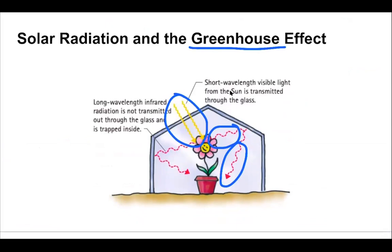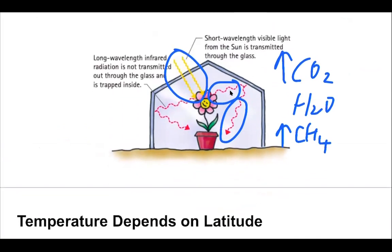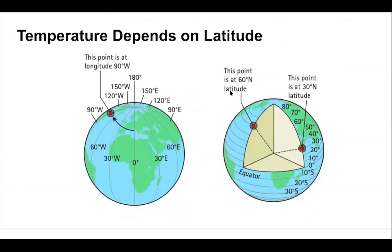A greenhouse is a little glass building where you can raise plants, and if you've ever been to one they're very warm inside. Visible light comes through the glass and strikes the plant, but then the ground and plants re-emit lower-energy infrared light that can't escape through the glass — it gets trapped and heats up the space. This is what's happening to our atmosphere. That's a good thing — we need the warmth. But gases like CO2, water vapor, and methane are being ramped up by human activity beyond natural levels, which is why we have global warming — too much infrared warmth getting trapped.